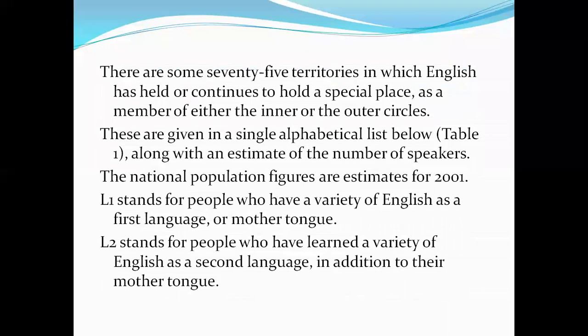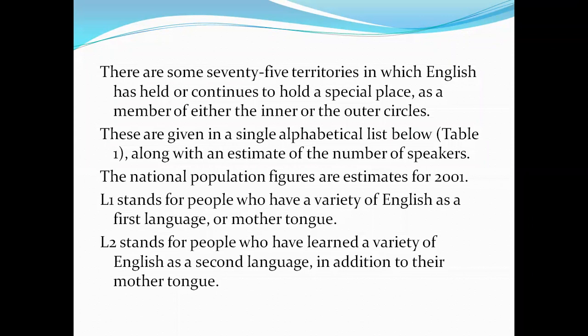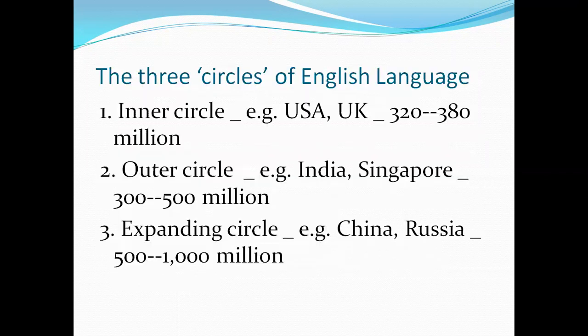There are some 75 territories in which English holds a special place as a member of either the inner or outer circle. We see that many countries use English as their first language, and nearly 70% of territories use English as their first language. Braj Kachru listed a table to help us understand the scenario, where L1 stands for first language and L2 stands for second language or international language. In summary: the inner circle (USA, UK) has 320 to 380 million people; the outer circle (India, Singapore) has 300 to 500 million; and the expanding circle (China, Russia) has 500 to 1,000 million.